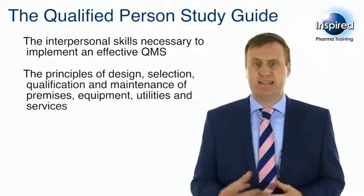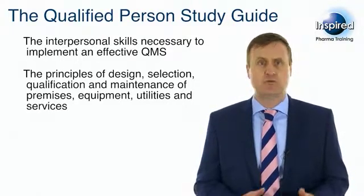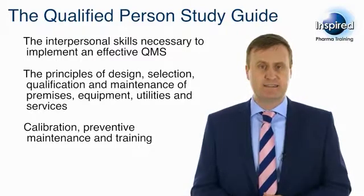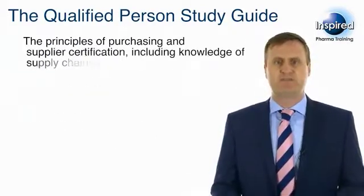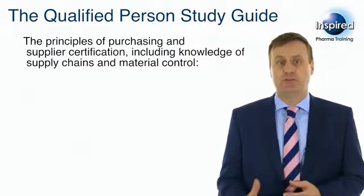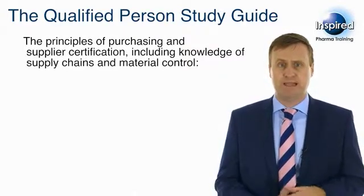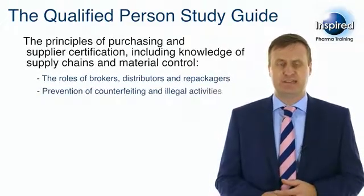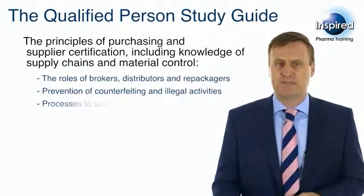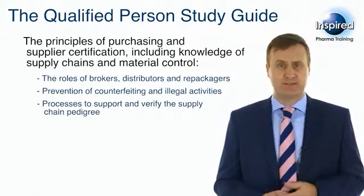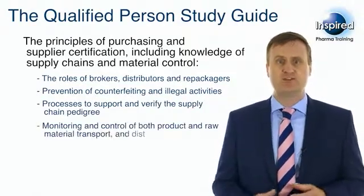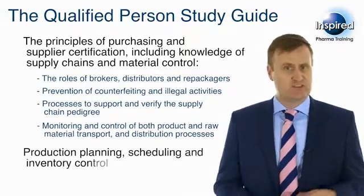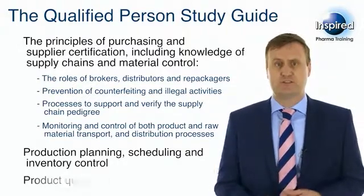The principles of design, selection, qualification and maintenance of premises, equipment, utilities and services. Calibration, preventive maintenance and training. The principles of purchasing and supplier certification, including knowledge of supply chains and material control, including the roles of brokers, distributors and repackers. Prevention of counterfeiting and illegal activities. Processes to support and verify the supply chain pedigree. Monitoring and control of both product and raw material transport and distribution processes. Production planning, scheduling and inventory control. Product quality reviews.